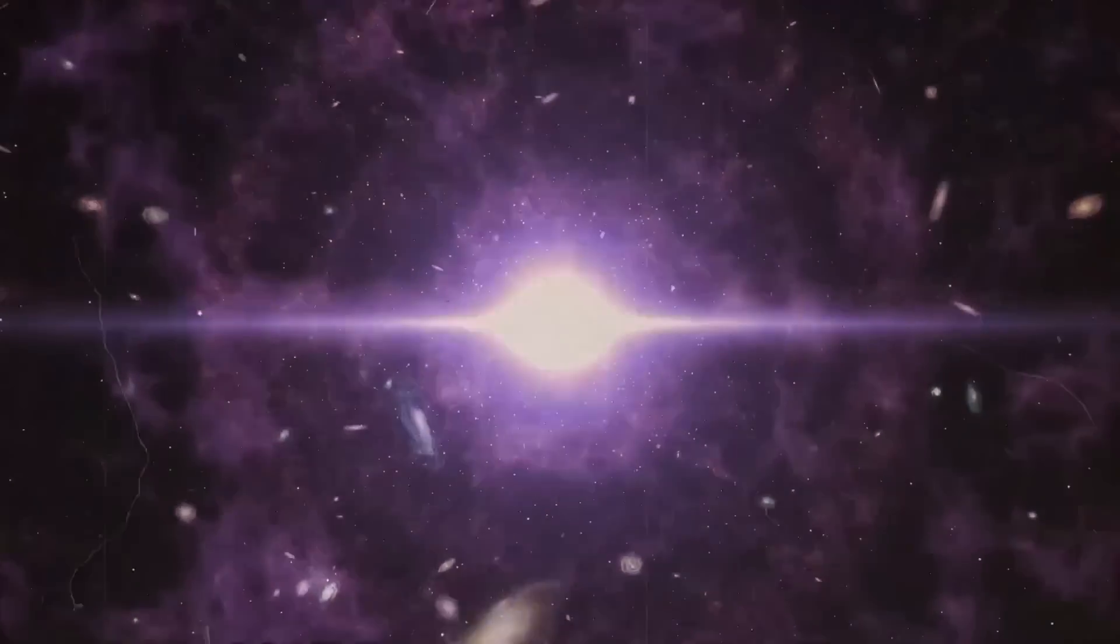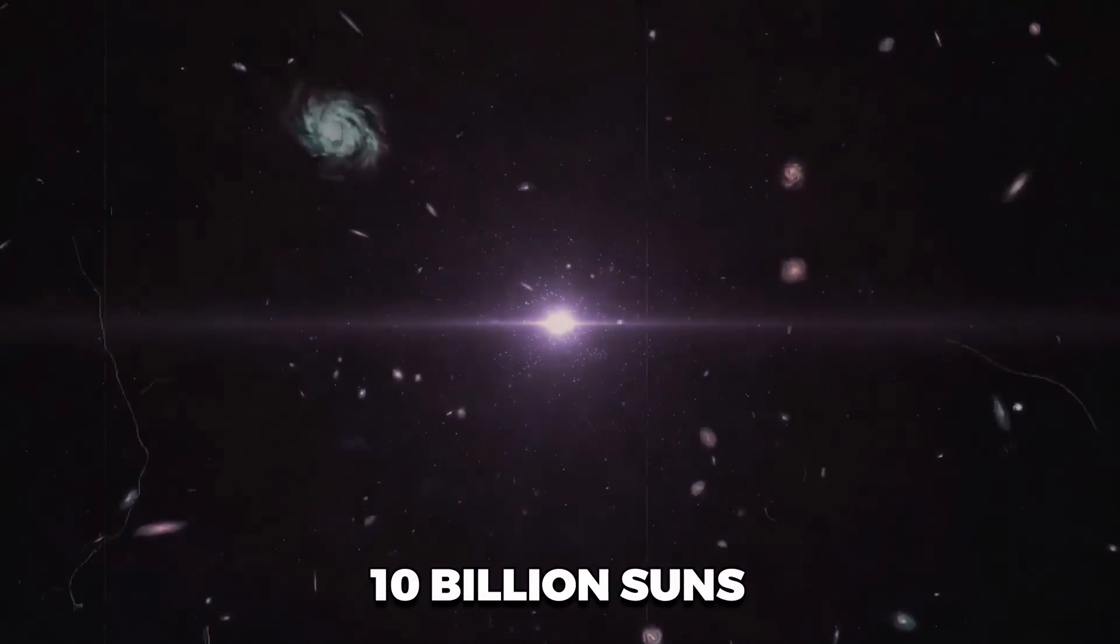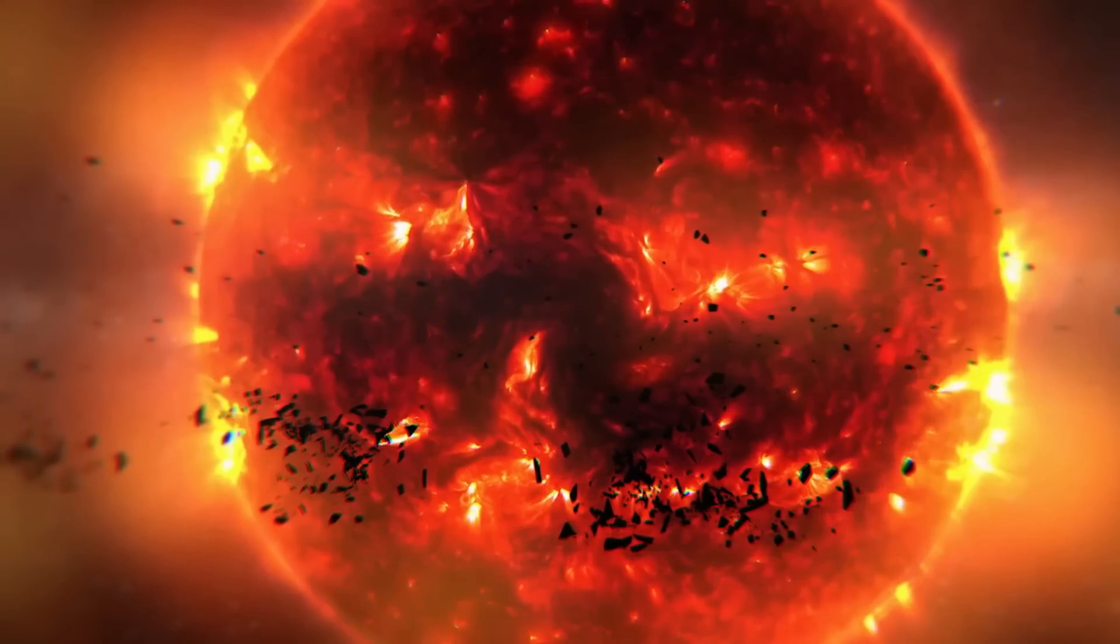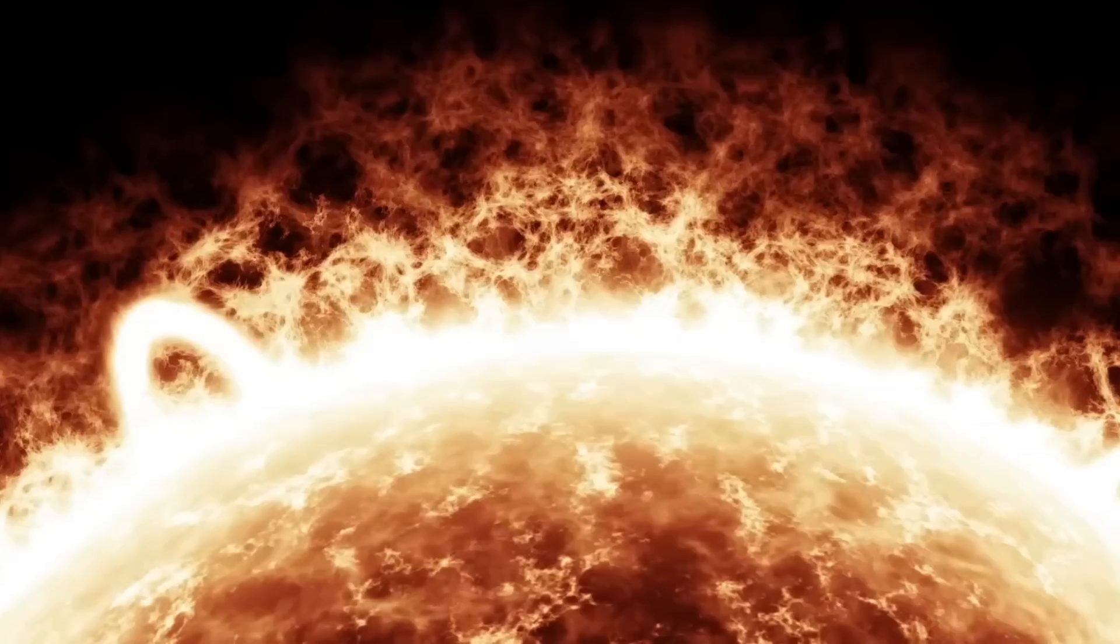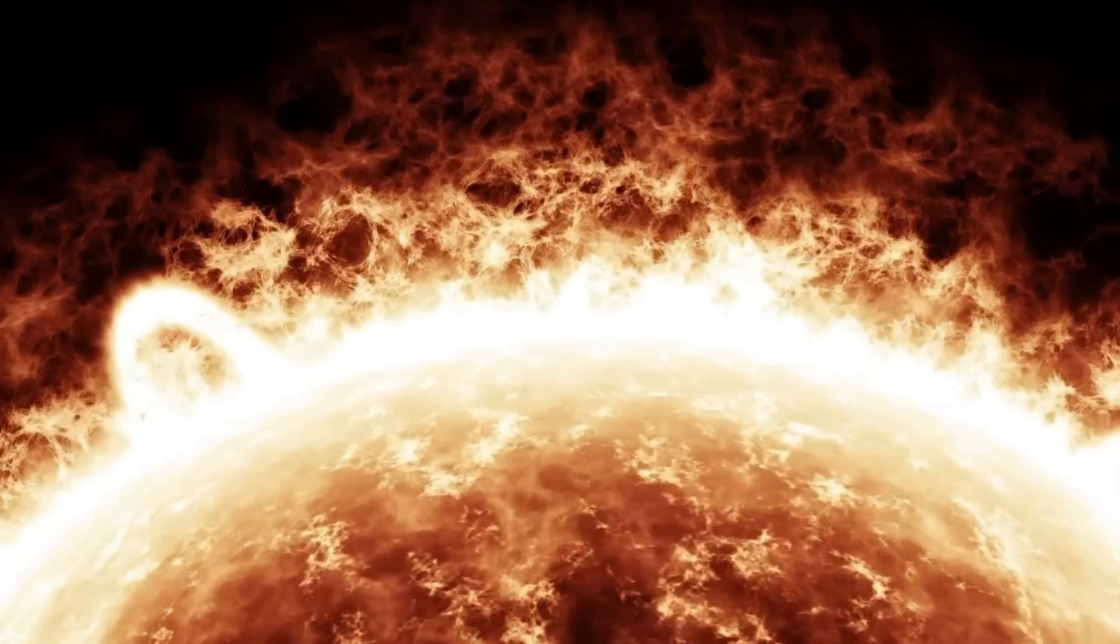Something called a supernova is one of the strongest forces in nature. It can make more energy than 10 billion suns. As stars age, they change color from the newest, hottest blue types to older, cooler red types. The color change depends on what stage of their growth the star is in.